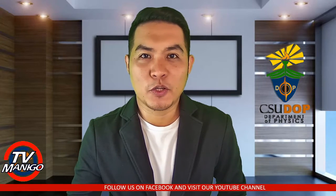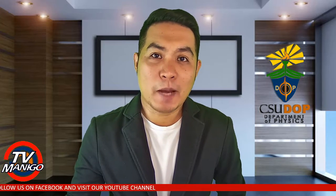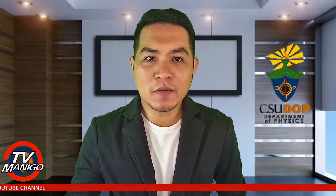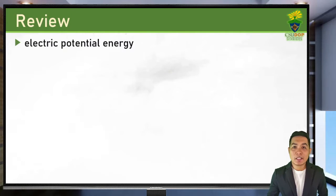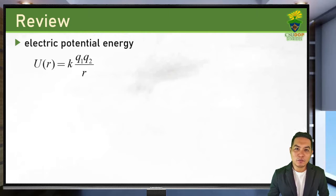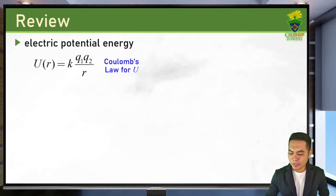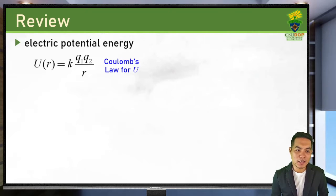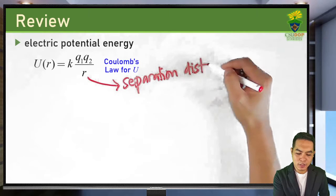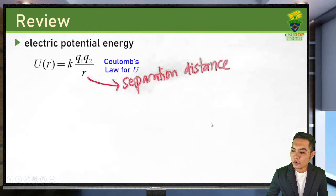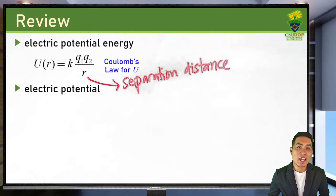Hello and welcome back to Physics 41, University Physics 3. We are now on our fourth chapter, and before we start, let's first review some of the concepts we need. We have discussed about the electric potential energy, whose symbol is U. For two point charges q1 and q2, the potential energy between them is given by k·q1·q2 / r — sometimes called Coulomb's law for potential energy — where r is the separation distance between the two charges.